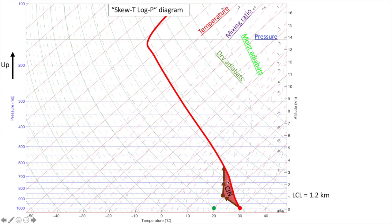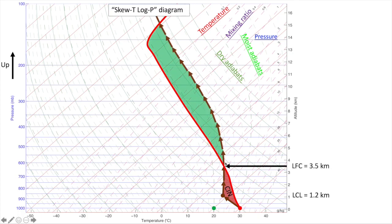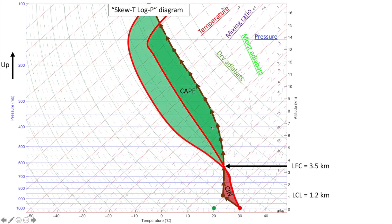However, if the parcel is lifted through this layer of convective inhibition, it will eventually reach the same temperature as its environment. After this point the parcel is less dense than the environment and convection will naturally take place. We call this point the level of free convection, or LFC — in this case at 3.5 kilometers. We call the area between the environmental lapse rate and the parcel's trajectory above the LFC convective available potential energy, or CAPE. A cooler upper atmosphere would mean more CAPE all else being equal, and more potential for very strong updrafts that could support, for example, hail formation.